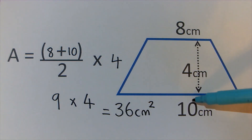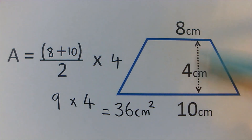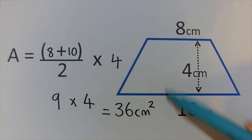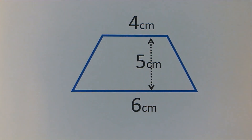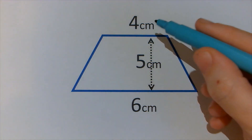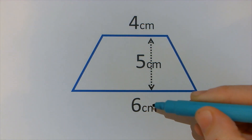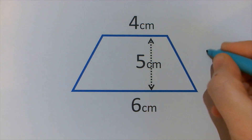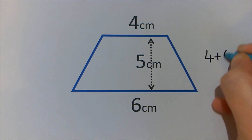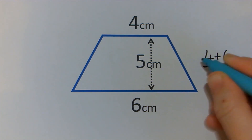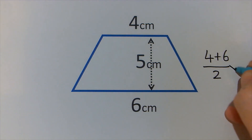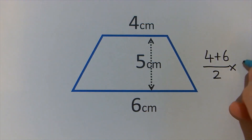So we've done half the sum of the parallel sides times the distance between them — this is how to calculate the area of a trapezium. Now I'm just going to do one last example. Half the sum of the parallel sides. So the parallel sides are here, and the sum we know is add. Half the sum of the parallel sides times the distance between them.